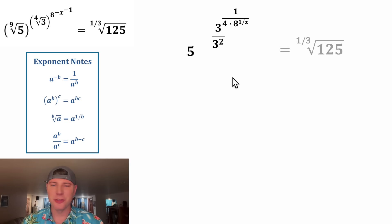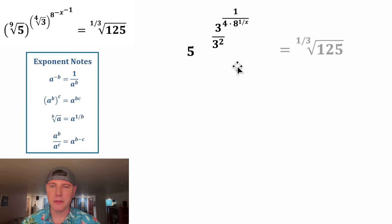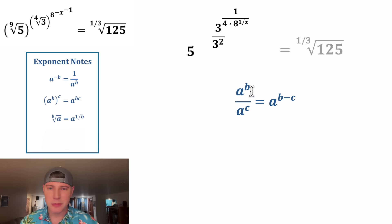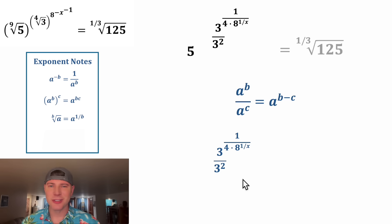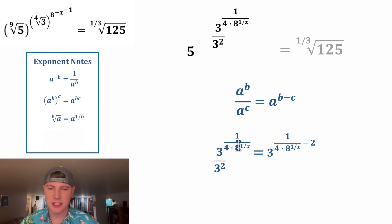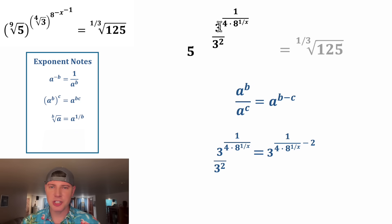We can change this nine into three squared, and now the top and the bottom have matching bases — they both have a base of three. Anytime the bases match on top and bottom, you end up subtracting the exponents. So to simplify all this, we're going to subtract this exponent minus this exponent, giving us this result. And now the left-hand side is done.